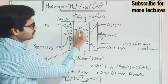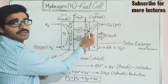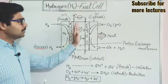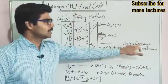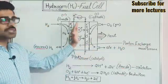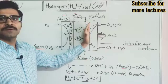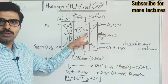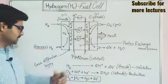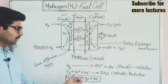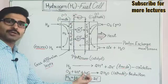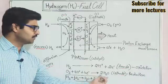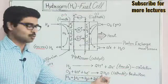At the cathode, oxygen accepts these electrons. There is also the involvement of protons, which pass through the proton exchange membrane from the anode side to the cathode side. So at the cathode we have three things coming together: oxygen, protons, and electrons.